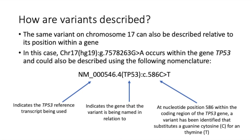In this case, at this position in the genome on the forward strand, the reference nucleotide is a G, and in the variant it is changed to an A on this strand. At the same position on the reverse strand, the reference nucleotide is a C, which is complementary to the G nucleotide on the forward strand. On the reverse strand, the variant is a substitution of this C to a T, which is complementary to the variant A nucleotide on the forward strand.